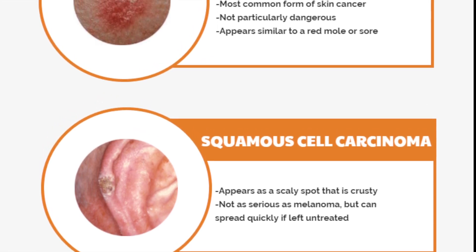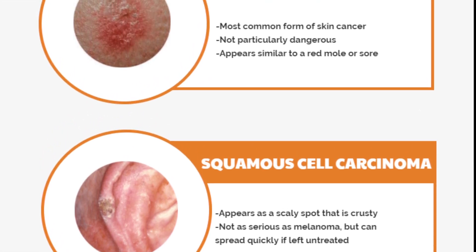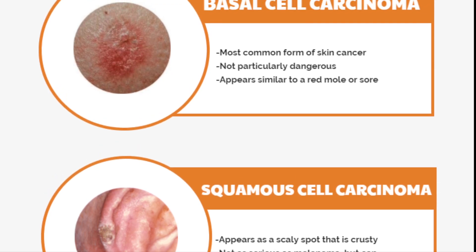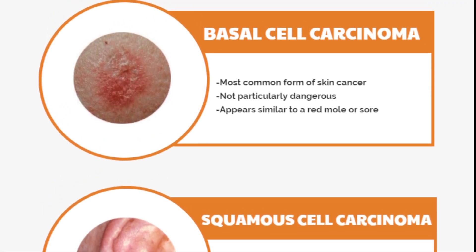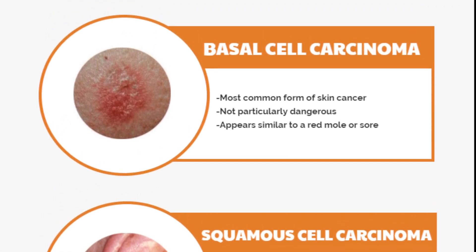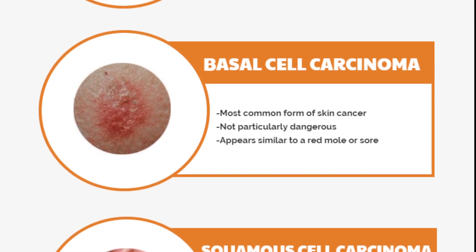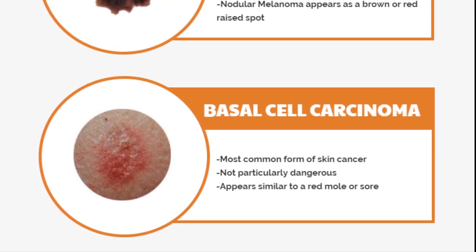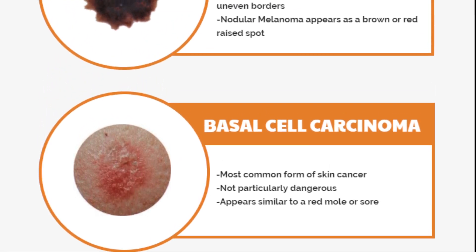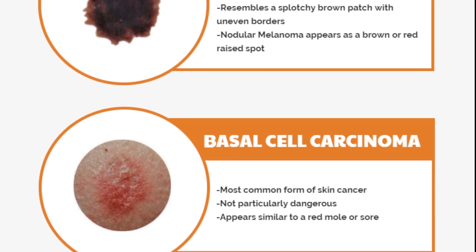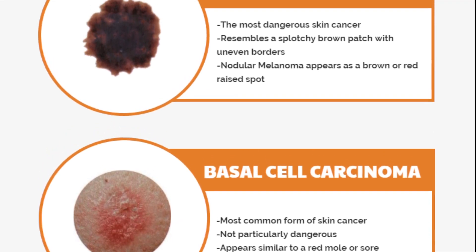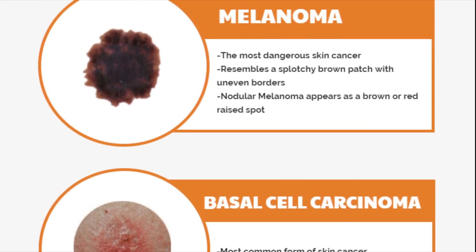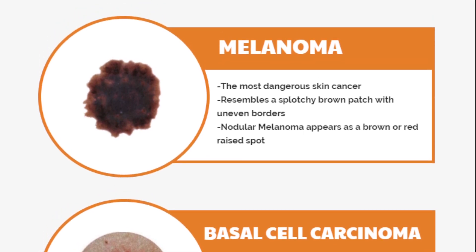Basal cells lie beneath the squamous cells. They divide, multiply, and eventually get flatter and move up in the epidermis to become new squamous cells, replacing the dead squamous cells that have sloughed off. Skin cancer that begins in basal cells is called basal cell carcinoma.